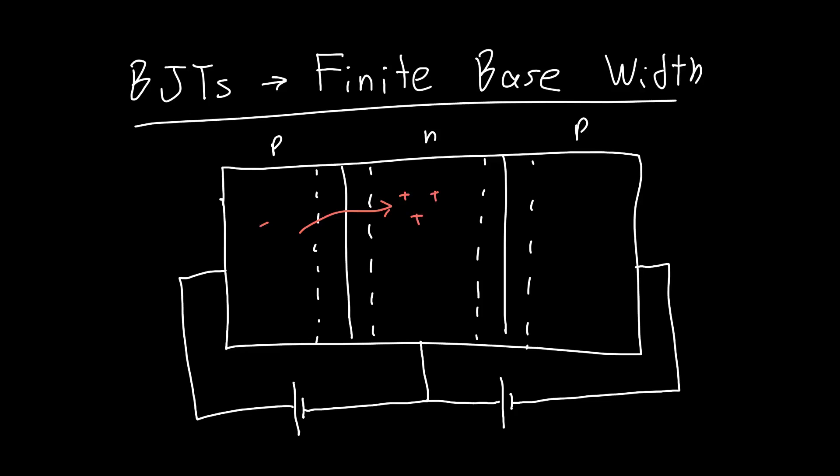So we're injecting a bunch of holes from this P side to this N side. And we wanted to figure out what the current is in this device. And for that, we need the carrier distribution, P of X. And we know what the carrier distribution is right here, so right outside the depletion region, because we just applied the law of the junction to find it.